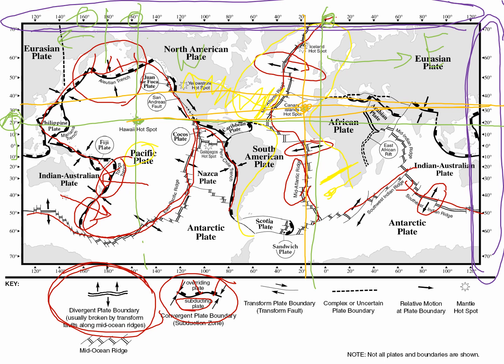In California, earthquakes occur because of a transform plate boundary — a sliding boundary. The San Andreas Fault is a major example. The plate on one side is sliding north past the North American plate. There are three ways plates can move: converging, diverging, or sliding past each other as a transform boundary. There are also uncertain or complex plate boundaries where we're not always sure what's happening.